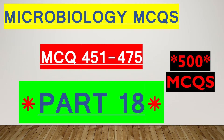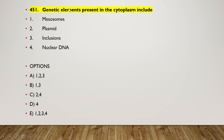Hello friends, today in this video I am going to discuss MCQs on general microbiology. This is the 18th part of the series of 500 MCQs on general microbiology. The first question is: genetic elements present in the cytoplasm include mesosomes, plasmid, inclusions, or nuclear DNA.